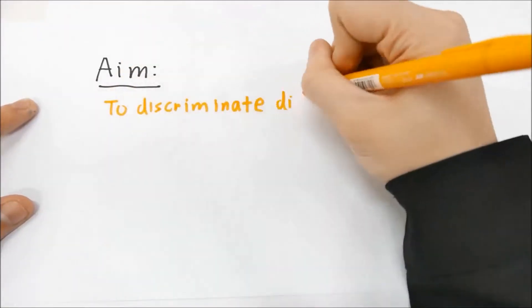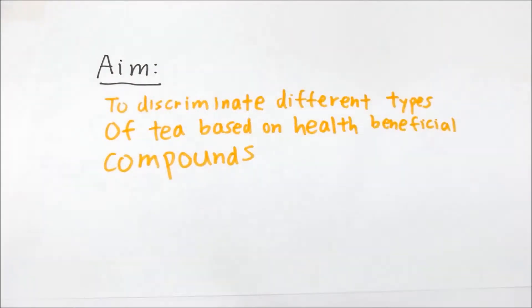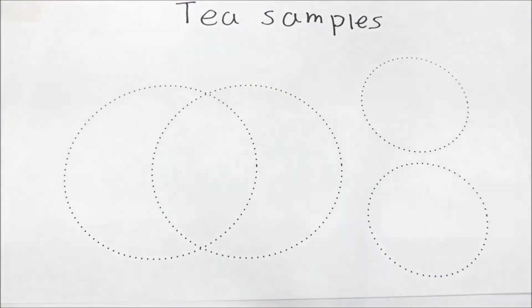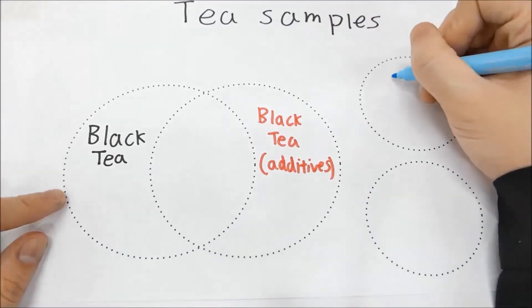In order to have a better general idea on the differences between different types of tea, we have conducted this project to be able to discriminate different types of tea based on their health beneficial compounds. For this project, we have decided to place our focus on black tea, black tea with additives, pua tea, and oolong tea.